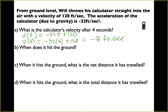To find when it hits the ground, we need our position function. Using anti-derivatives, s(t) equals negative 16t squared plus 120t. Since it's thrown from ground level, the initial position at t equals 0 is zero feet, so our initial position is (0, 0) — that's why we can write the position function this way. If it were thrown from eight feet off the ground, we'd add plus 8.